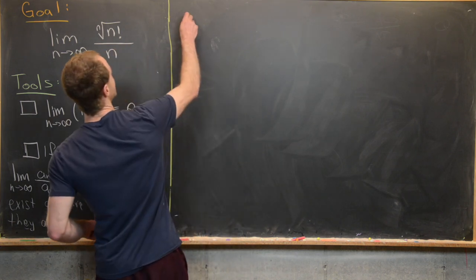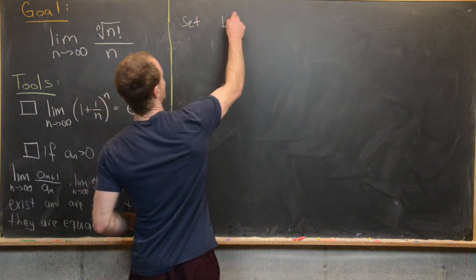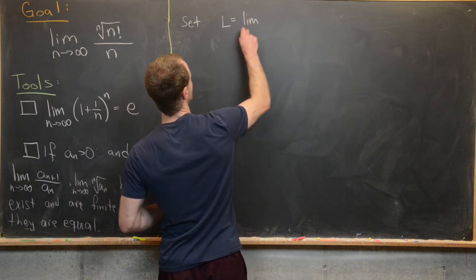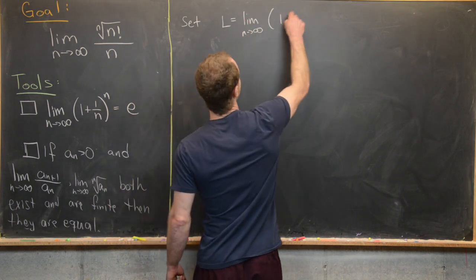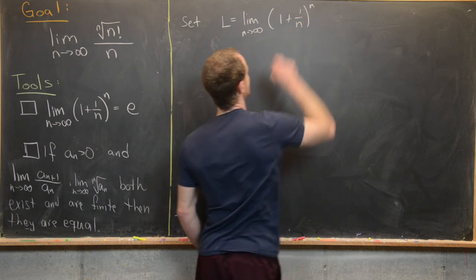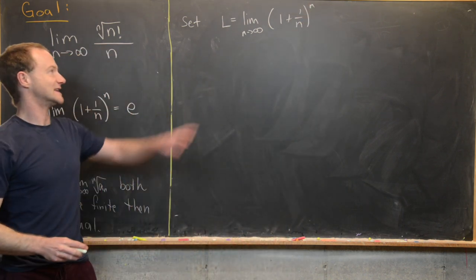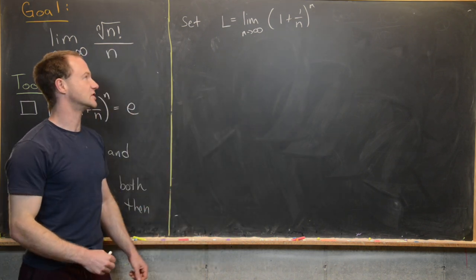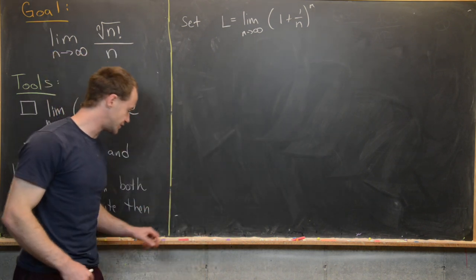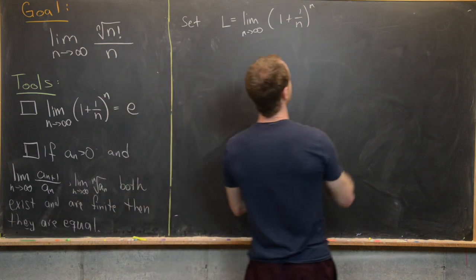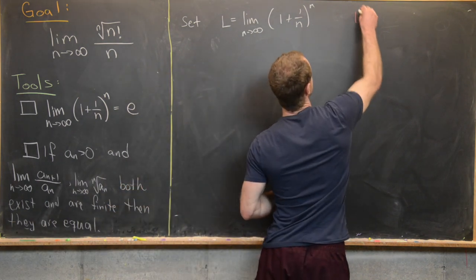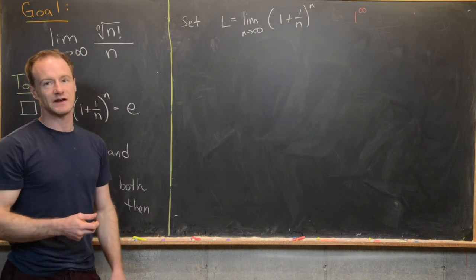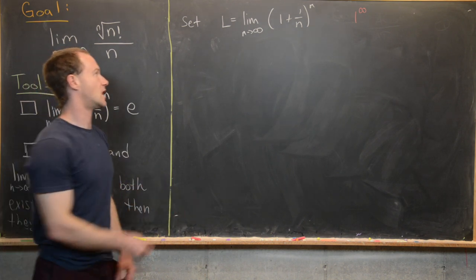We'll start by setting the limit equal to l. So we have l equals the limit as n goes to infinity of one plus one over n to the n. Notice that as n goes to infinity, the expression inside the parentheses goes to one while the exponent goes to infinity. So this is an indeterminate form of type one to the infinity.